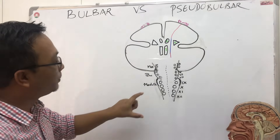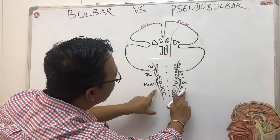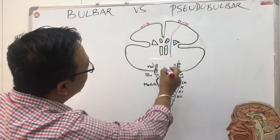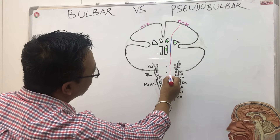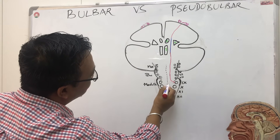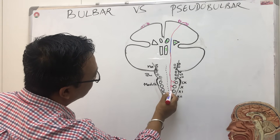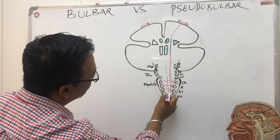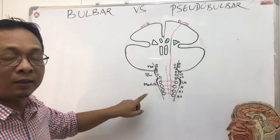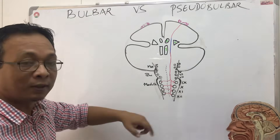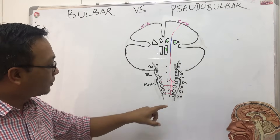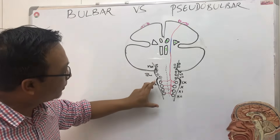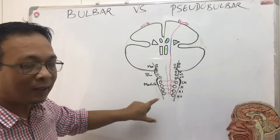When we discuss bulbar and pseudobulbar palsy, we are basically concerned with cranial nerves nine, ten, eleven, and twelve. This is the upper motor neuron supplying nine, ten, eleven, twelve with dual supply. There is a change in the twelfth nerve because the twelfth nerve is contralateral — the lower nucleus of the twelve nerve supplies the genioglossus.